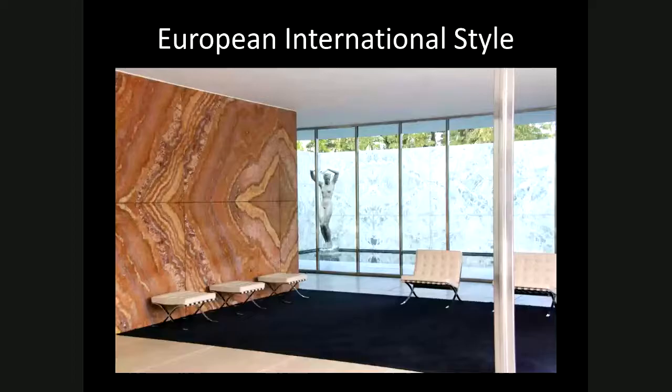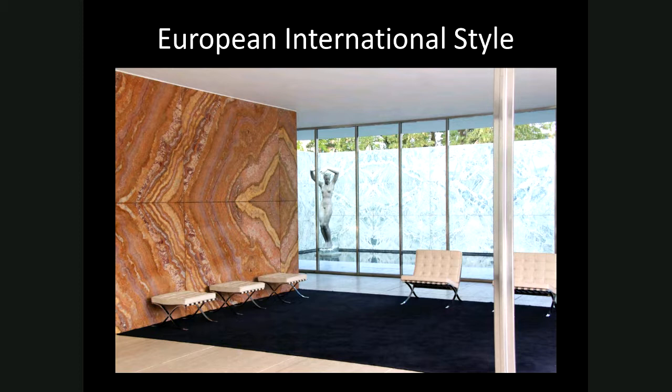Today we're going to continue with European modernism, especially focused on what is known as the International Style, which comes out of Europe and especially out of Germany in the 1920s.